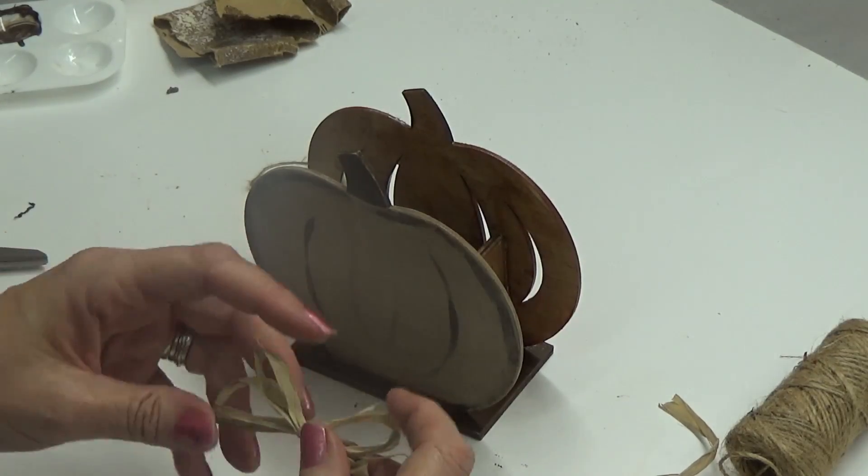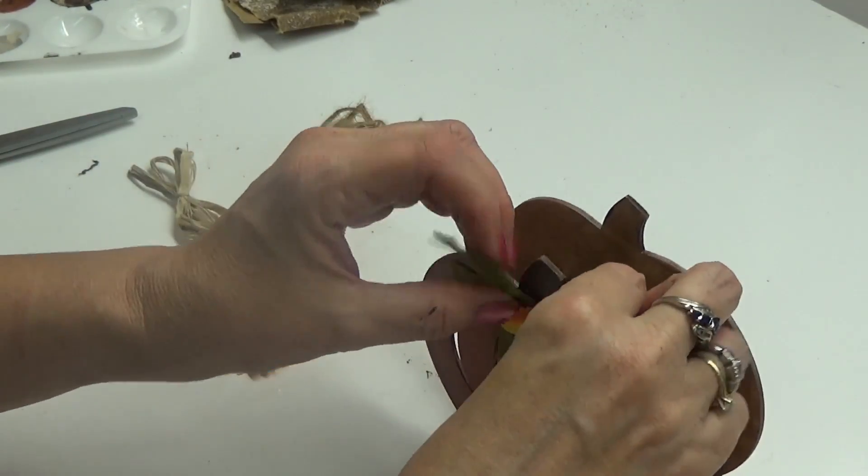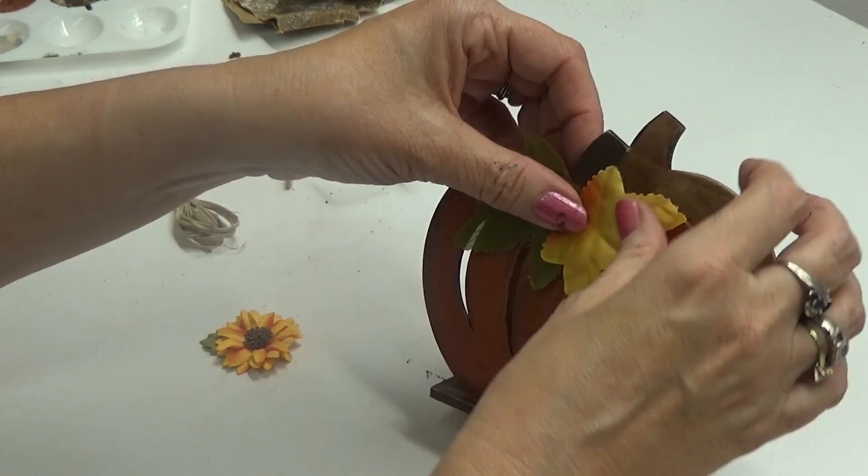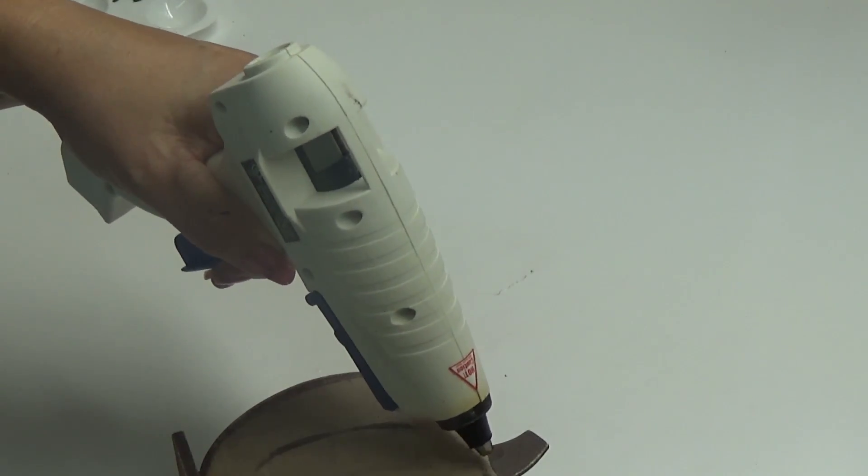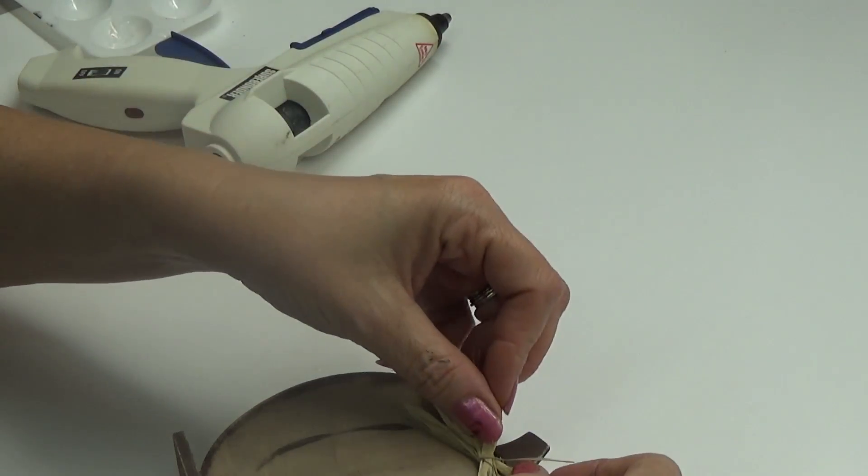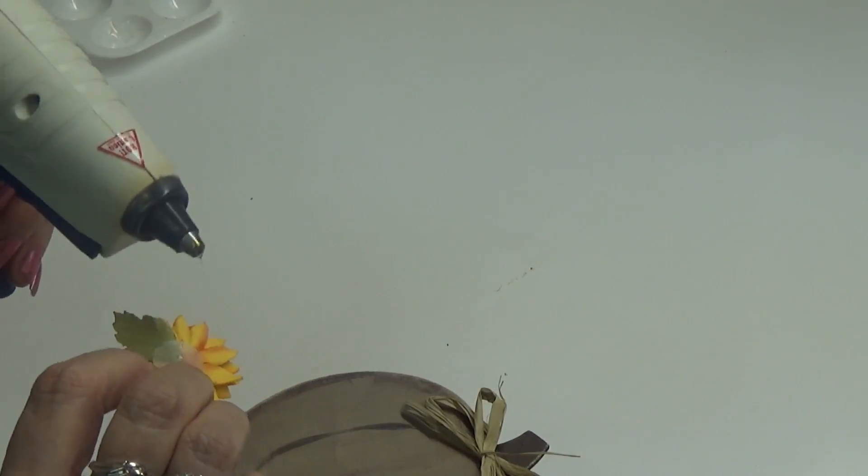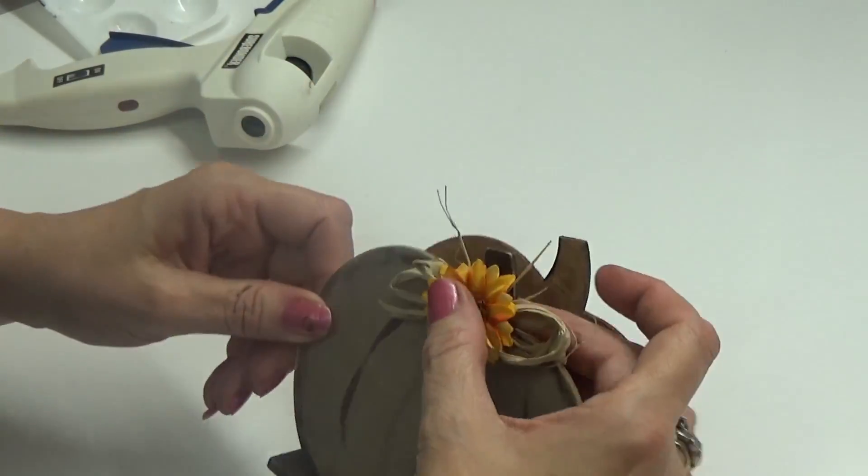But now I'm debating what I want to decorate it with. I think we'll go with these leaves, and this side I'm going to keep a little more simple. And my glue gun is not a very good one, I would not recommend that glue gun. It's nice because it's cordless, but it just not a good glue gun - it leaks glue, it makes a mess. I gotta get a new one.